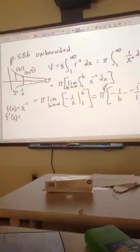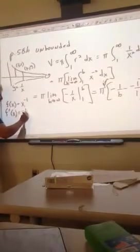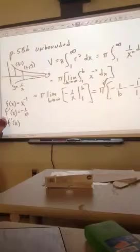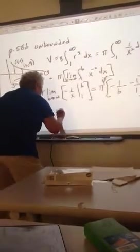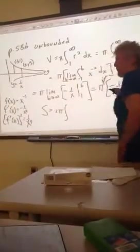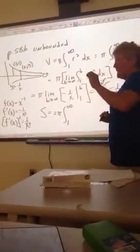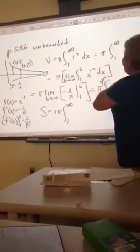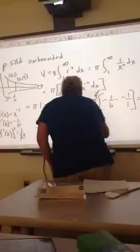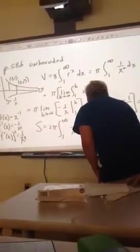1 over x squared. Negative 1 x to the negative 2, so negative 1 over x squared. And I need its square, 1 over x to the 4th. 1 over x square root of 1 plus 1 over x to the 4th dx.